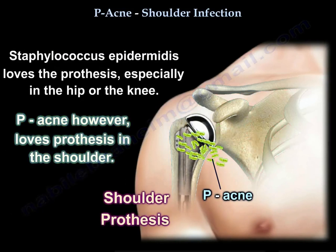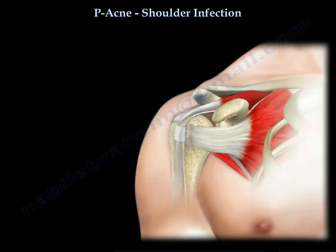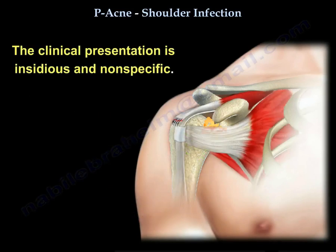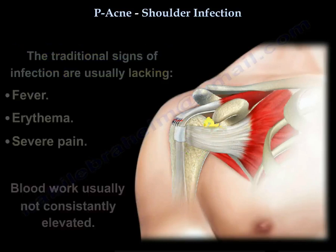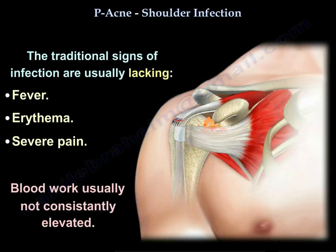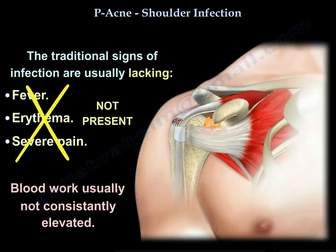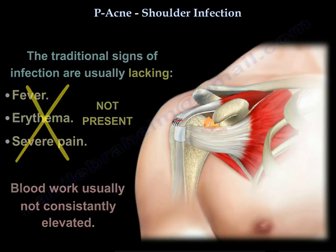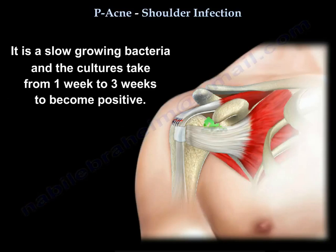Staph epi loves prostheses especially in the hip or knee, while P. acnes loves prostheses in the shoulder. The clinical presentation is insidious and non-specific. The traditional signs of infection are usually lacking, such as fever, erythema, and severe pain.